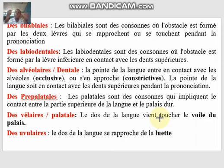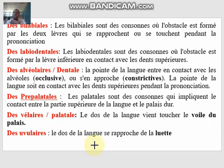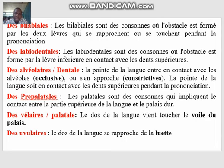For pré-palatal sounds, the upper part of the tongue touches the hard palate to give that sound. For vélaire sounds, the back of the tongue touches the voile du palais — the soft palate — to produce those sounds. And for uvular sounds, the tongue touches the luette — the uvula — in that area. Those are the main places of articulation.